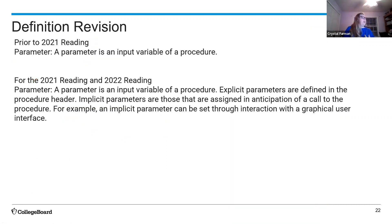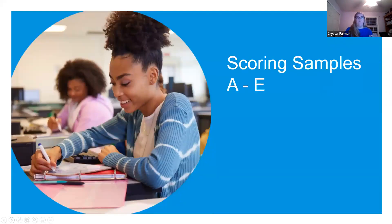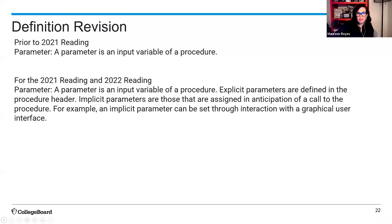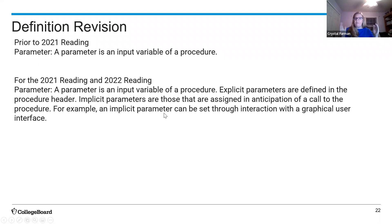We've added definitions of implicit and explicit parameters to the scoring guidelines at the very end. Explicit parameters are listed right in parentheses after the procedure name — whatever is being passed explicitly. Implicit parameters could be, for example, global variables in something like App Inventor — so the procedure is pulling in a global variable rather than having it passed directly.